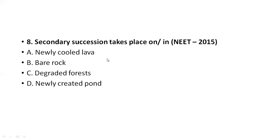Secondary succession takes place on degraded forest. Reforestation is possible in degraded forests. You cannot see secondary succession on newly cooled lava or bare rocks. In degraded forest, you can again see a new forest coming. So the correct answer is degraded forest.